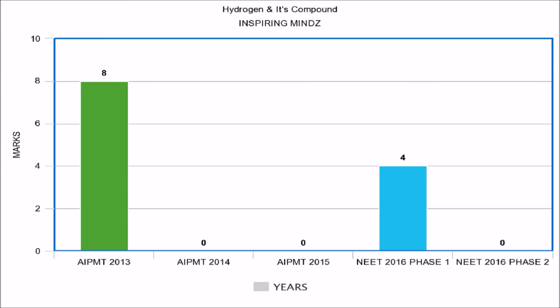For hydrogen and its compounds, in AIPMT 2013 eight marks of questions were asked, which reduced to 4 marks in NEET 2016 Phase 1, while in all other years no questions were asked from this chapter.